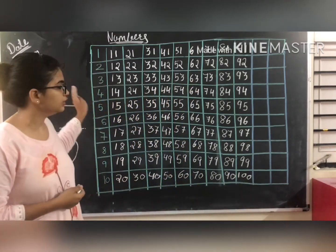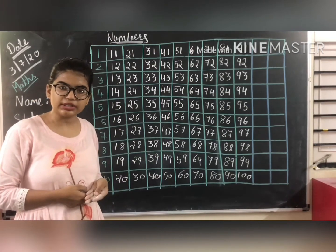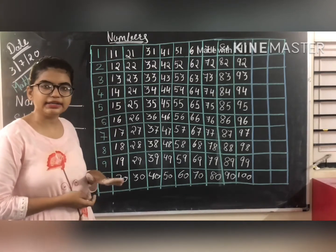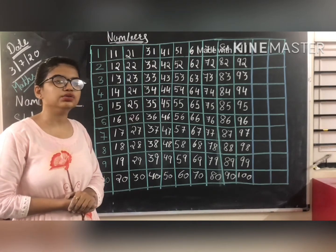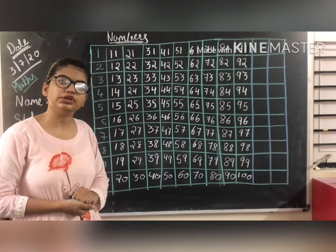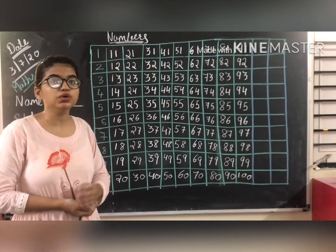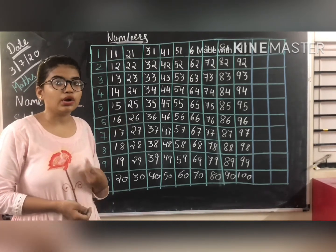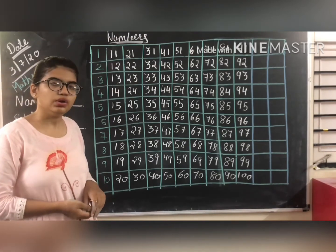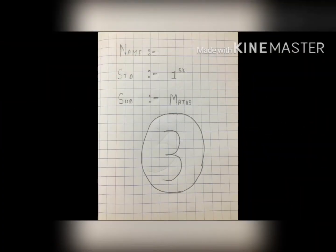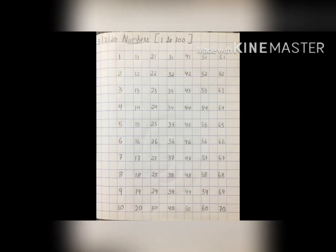So students, we have recalled 1 to 100. You have already learned about it, so for now we will be recalling. What you have to do — you have to revise it all, 1 to 100, and write in your notebook. You should also revise the spellings. Till today we will do this only. After that, we will be learning about 3-digit numbers. You might be very enthusiastic and curious to learn what 3-digit numbers are. So students, for the next time, we will do 3-digit numbers. Thank you, bye-bye.